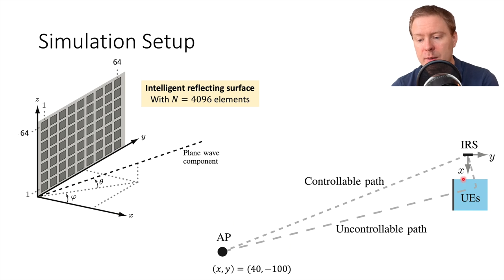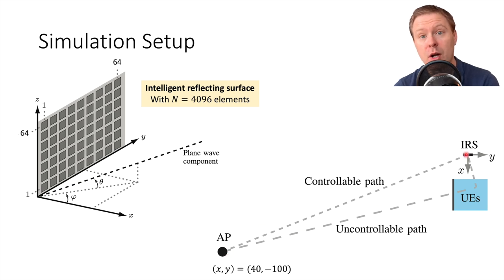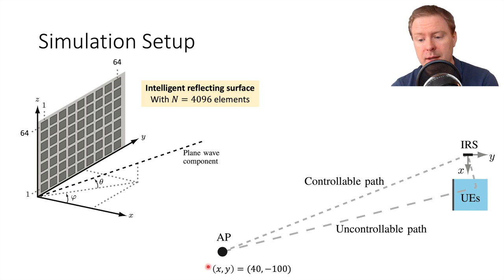The setup looked like this: there was an IRS at one location, and an access point at the origin — 40 meters down and minus 100 meters to the left. The signal is transmitted from the access point. It could reach users directly, but there is a non-line-of-sight path through a wall to reach the users, who are all located in a room 12 by 13 meters large. However, the IRS has a line-of-sight path to the access point — it might be placed on a neighboring building, with the signal entering the room through a window. There are scattering elements inside the room, and for most users there is a direct path from the IRS, but not for all.